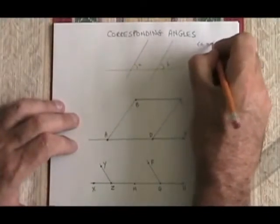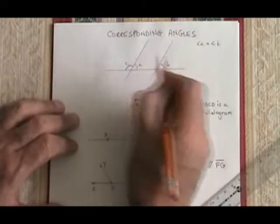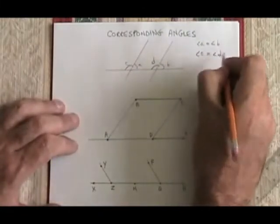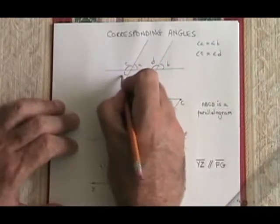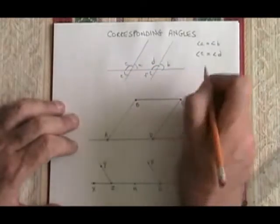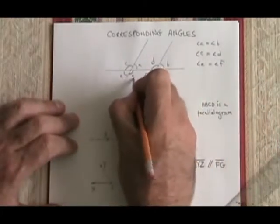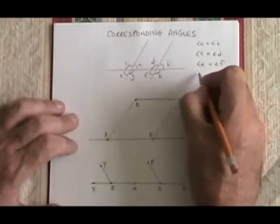Angle A equals angle B. Angle C equals angle D. Angle E must be equal to angle F. And finally, angle G must be equal to angle H.